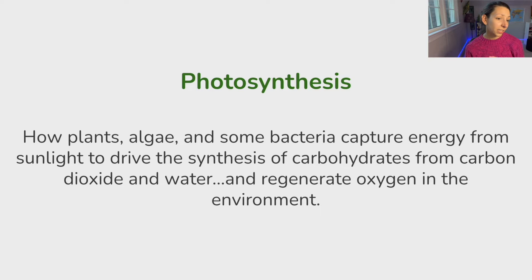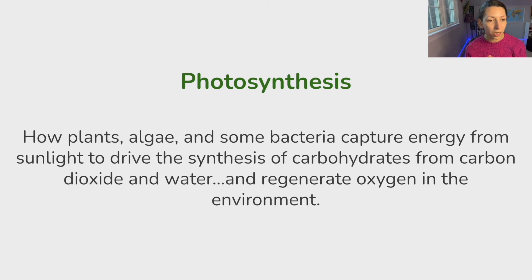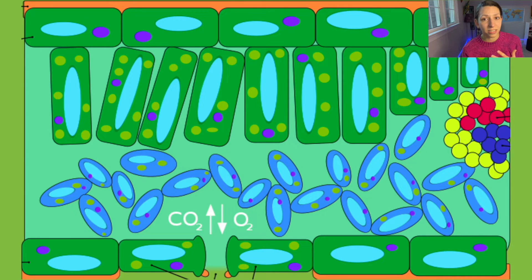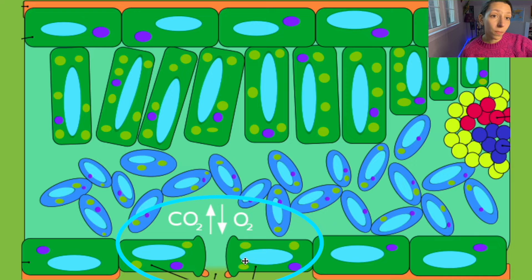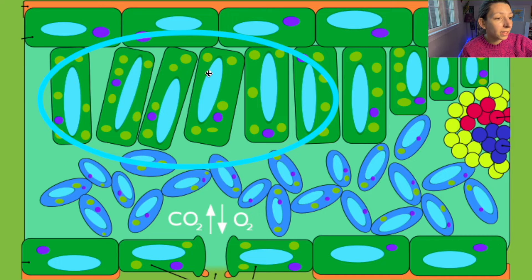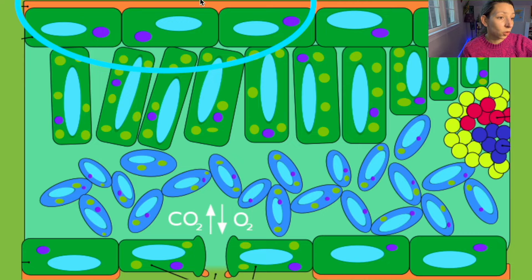At the college level, photosynthesis is defined as how plants, algae, and some bacteria capture energy from sunlight to drive the synthesis of carbohydrates from carbon dioxide and water, and regenerate oxygen in the environment. Let's take a closer look at some leaf anatomy. These cells here are called guard cells — they open and close, making pores called stomata, where gas exchange can happen. Carbon dioxide can go in, oxygen can go out, water vapor can go out. Here we have our vascular bundle for delivering food and nutrients throughout the plant, the spongy mesophyll, the palisade mesophyll layer, the upper epidermis, and finally the waxy cuticle on top.